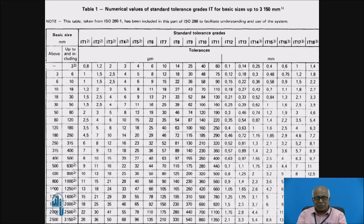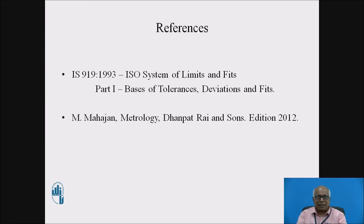Now this table is used as reference. We can also calculate. For all these topics I used references IS 919 1993. This is ISO system of limits and fits, part one specified by the Bureau of Indian Standards. It consists of basis of tolerance and deviations and fits. Apart from that, I also used the book of M. Mahajan Metrology, Dhanpatra and Sons, edition 2012.